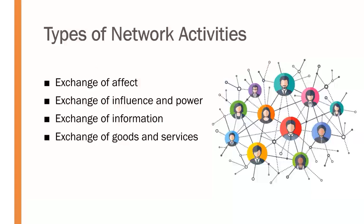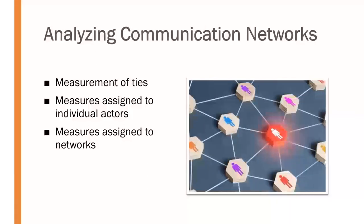When thinking about how to examine and study communication networks, there are a few things we need to measure. Daniel Brass presented a framework in 1995 with three categories for analyzing communication networks: the measurement of ties that exist, the measures assigned to individual actors, and the measures assigned to networks themselves. Let's examine the components of each of these.